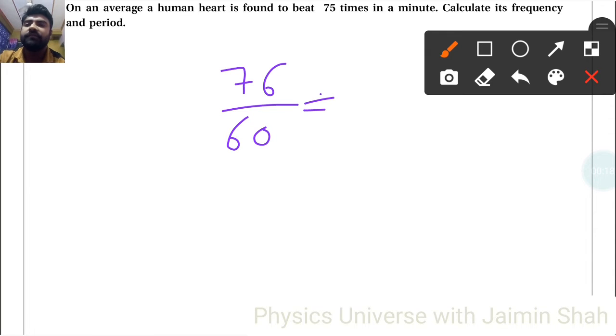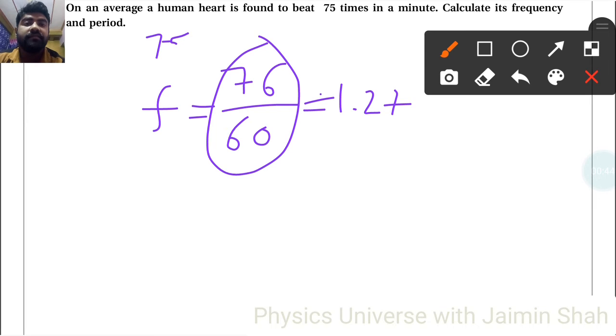76 upon 60, that is 1.27. Right, now frequency. So this is the frequency, 1.76... 1.27... actually it is 75, right. So no problem. 76 upon 60. So see, 75... 60 seconds, 75 times, so in one second how much?